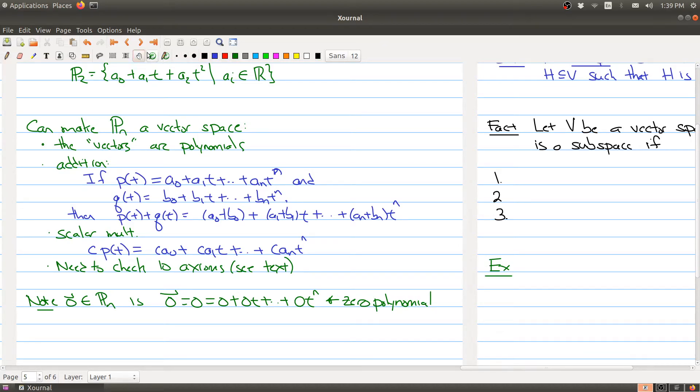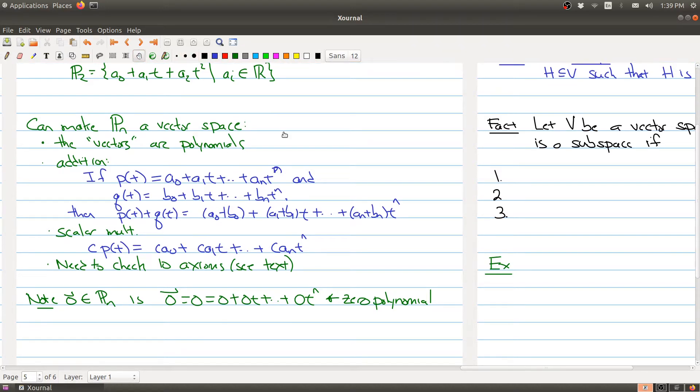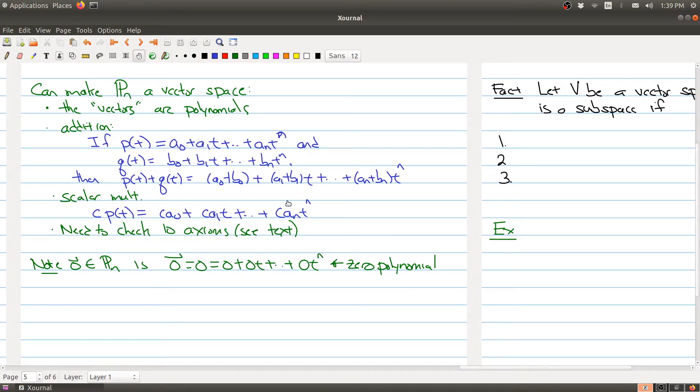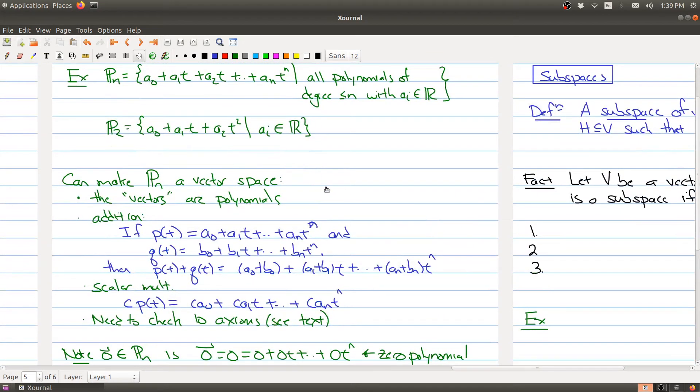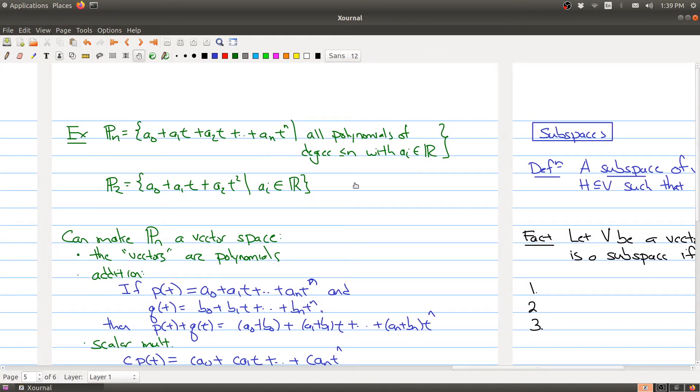And as promised, I will give you an example of what I mean by these operations in a second. But the point is here is that P_n, a collection of polynomials to degree n, gives you a vector space less than or equal to n. And so for each n, we're getting a different vector space.